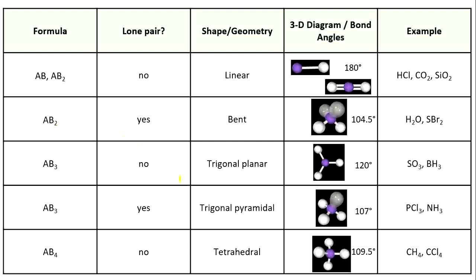Let's look at both trigonal shapes: trigonal planar and trigonal pyramidal. Both have three outside atoms — hence the prefix 'tri' in the name. The difference is that the pyramid has a lone pair, and that lone pair pushes the other bonds down, giving it a pyramidal form. Trigonal planar has bond angles of 120 degrees, and trigonal pyramidal has bond angles of 107 degrees.